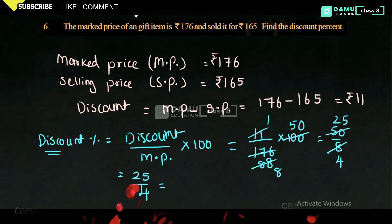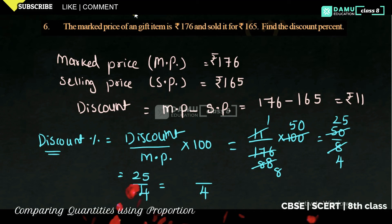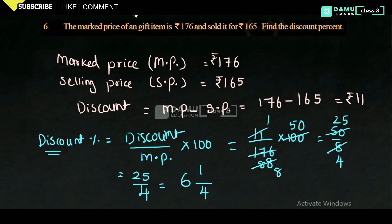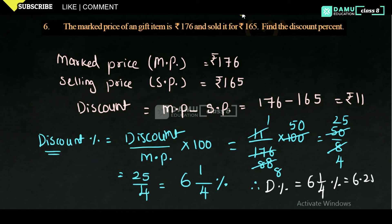So we can write 25 by 4 as a mixed fraction. 4 times 6 is 24, so the whole number part is 6 with remainder 1. Therefore discount percentage = 6 and 1/4 percent. We can also write this as 6.25 percent.